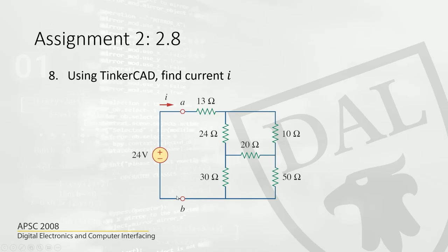Assignment 2, question 2.8. So using Tinkercad, find current I. You need a power supply to supply 24 volts. And you have resistors: 13 ohms, 24 ohms, 10 ohms, 20, 30, 50 ohms. So you have to connect them in this pattern.